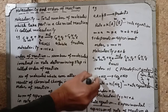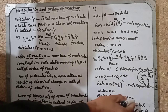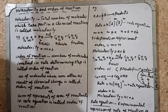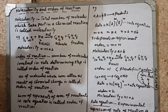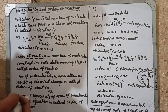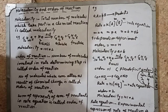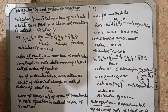Molecularity of CO + NO2 reaction is 2 — one molecule of CO and one of NO2. The rate equation is the experimental expression of the rate of reaction — this is called the rate equation. Tomorrow, insha'Allah, we will discuss the difference between molecularity and order of reaction, and what the rate equation is. Thank you, Allah Hafiz.